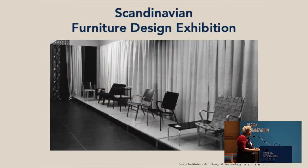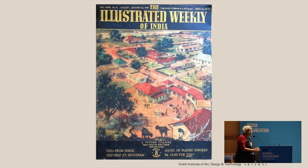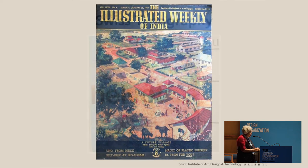Scandinavian furniture, birth of ergonomics, metal, changing plastic, changing the rules of how furniture could be viewed, looked at, or made. Illustrated Weekly of India, 1947, showing the future village — you can see the logic of order superimposed on this idealized Indian village.